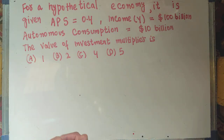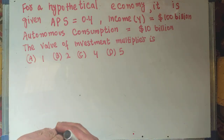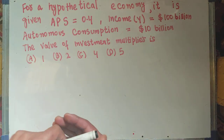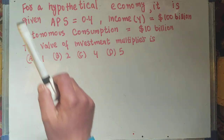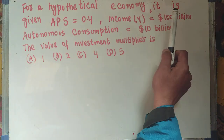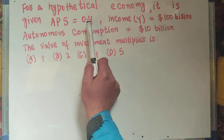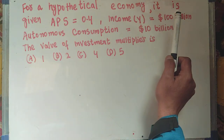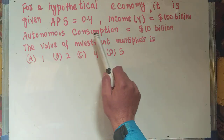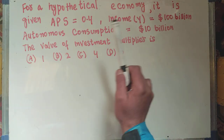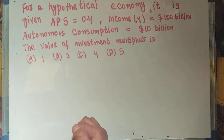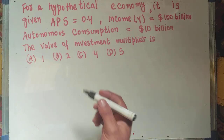In this video we will learn how to find out the value of the investment multiplier from the given average propensity to save and the autonomous consumption. The question is: for a hypothetical economy, it is given that average propensity to save is equal to 0.4, income is 100 billion dollars, and autonomous consumption is 10 billion. We need to find out the value of the investment multiplier.